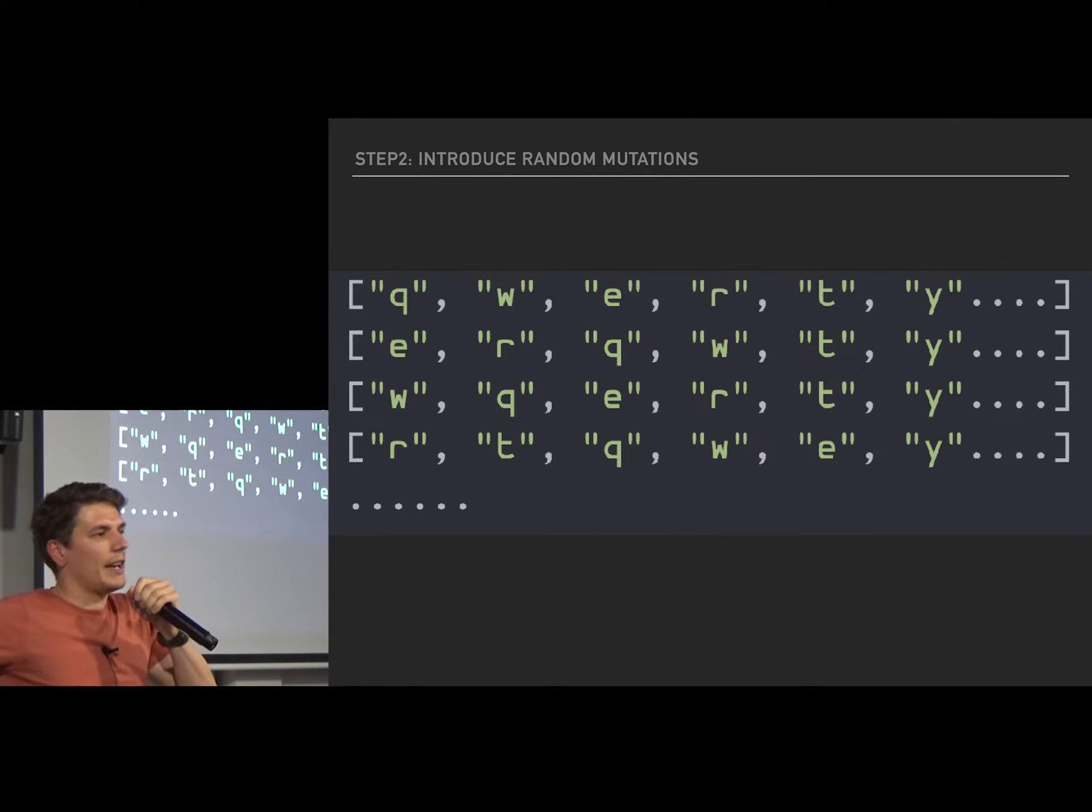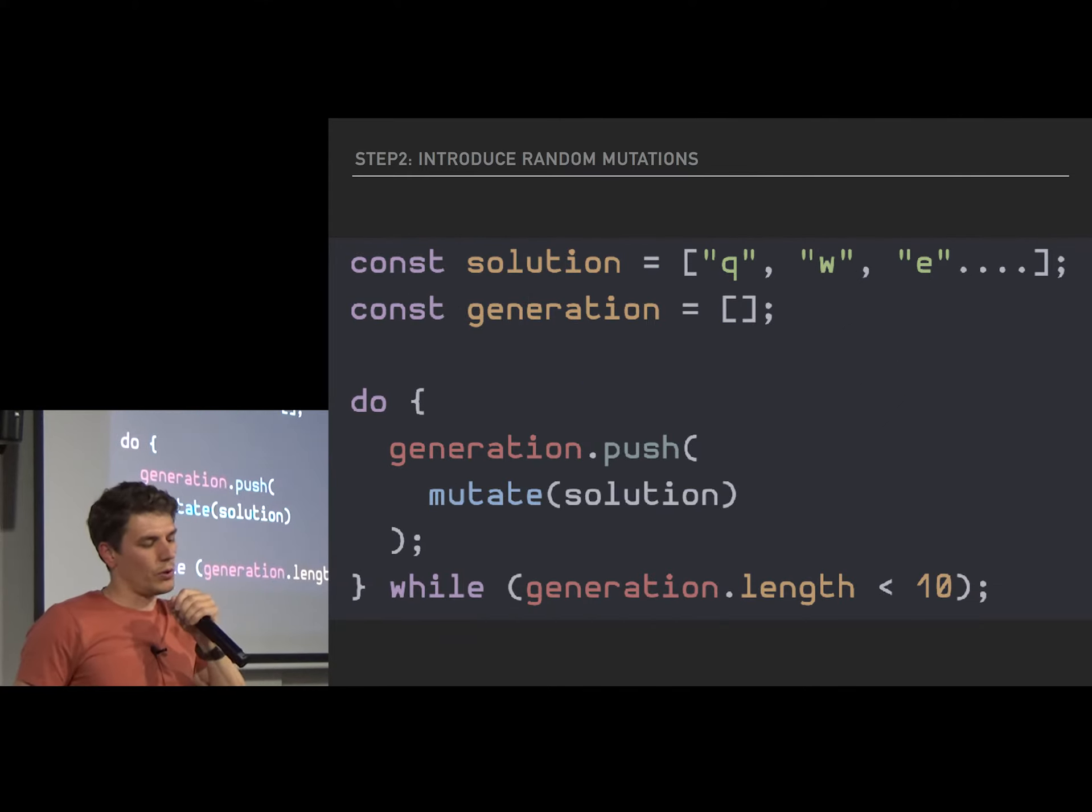Then you need to create random mutations of that solution. You need to create what's called a generation. You take a solution, you basically create a bunch of variations of that solution, randomly mutated. Pure JavaScript, you can do it.